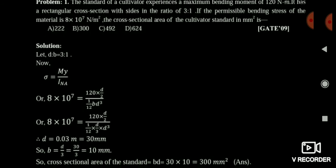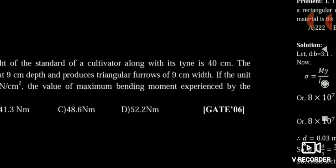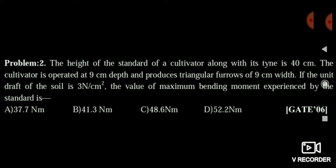Now see the next question. The height of the standard of the cultivator tine is 40 cm, the cultivator is operated at 9 cm depth, it produces a triangular furrow of 9 cm width, and the unit draft is 3 N/cm². Find the maximum bending moment experienced by the standard.